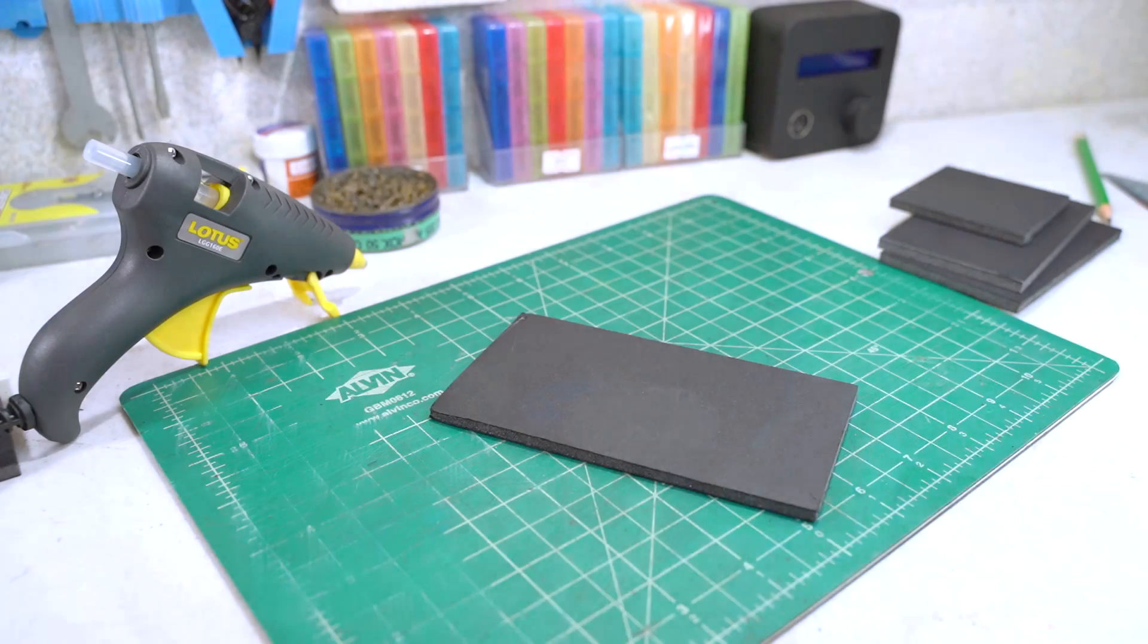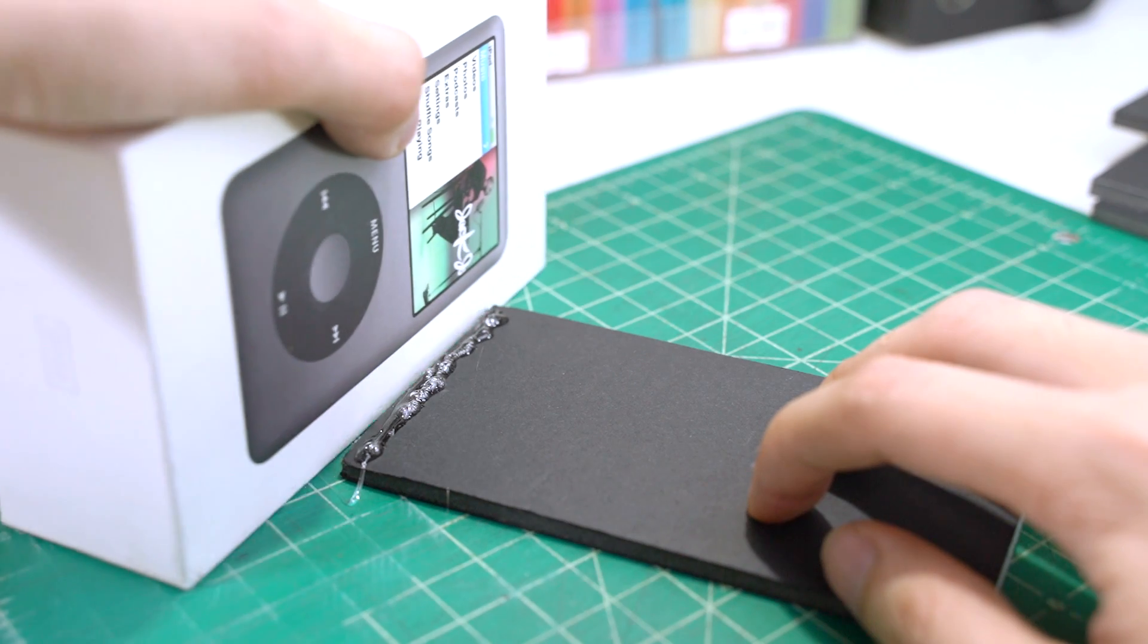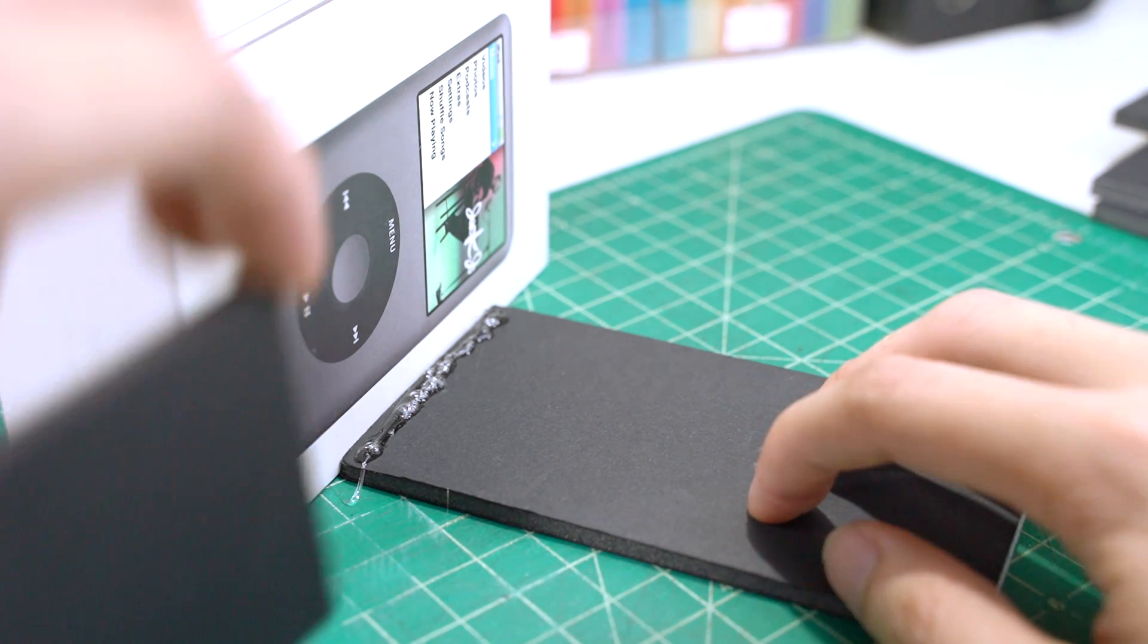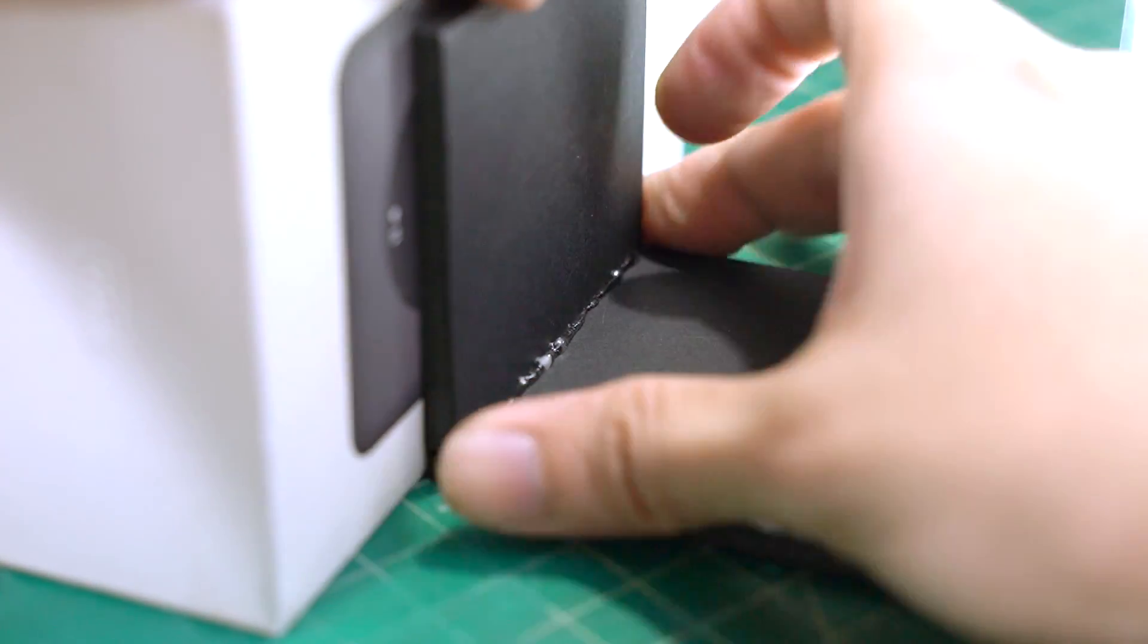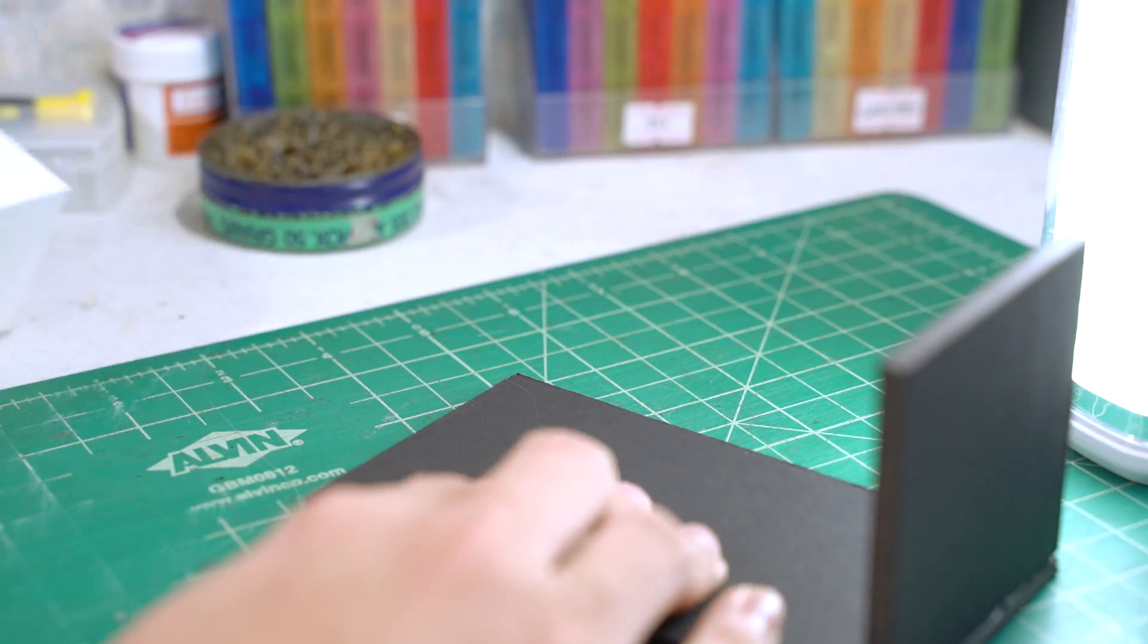I'll be using a glue gun to put together my cardboard enclosure. Now let's put an Apple product to good use. You can use some boxes that you may have lying around as a guide to form perfect 90-degree edges. It makes the lining process a lot easier. Now do the same thing to the other end.